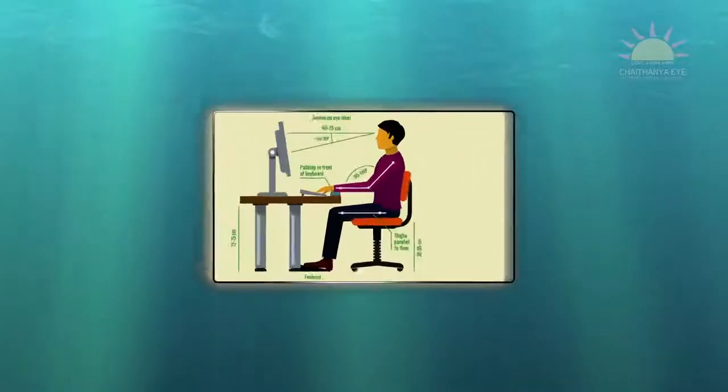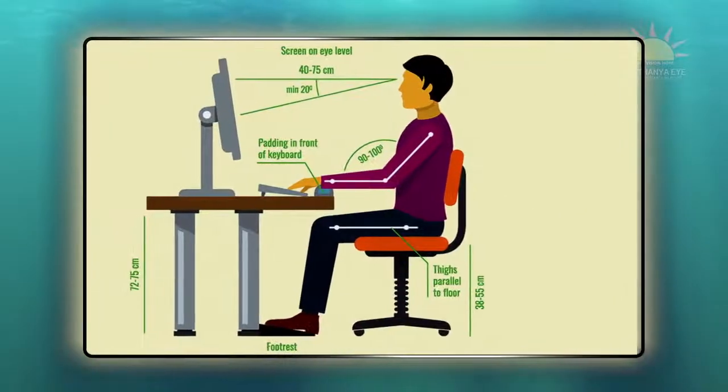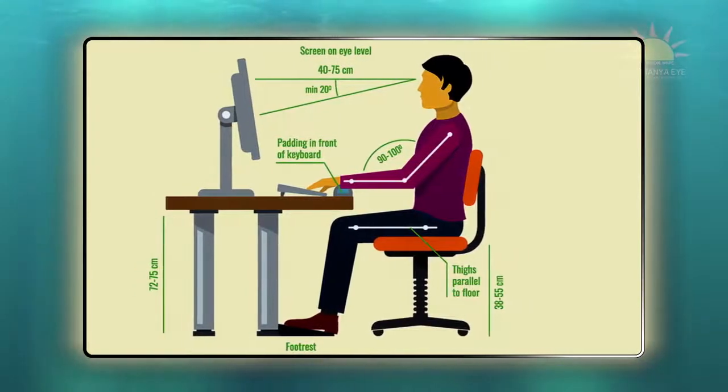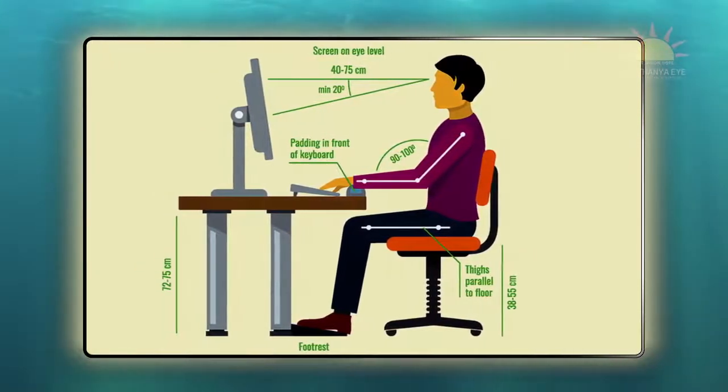Now let us see what we can do to optimize the workstation to prevent computer vision syndrome. First, maintaining an appropriate posture at the computer screen is important. The height of your chair should be adjusted so that the middle of the computer screen is at least 20 degrees below your eye level — the same way as you hold a book for reading.